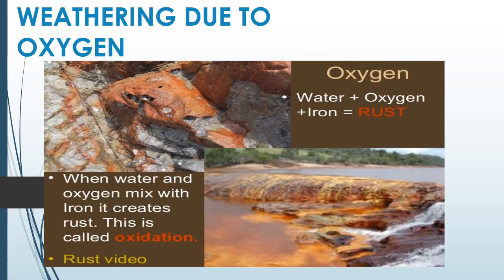When water gets mixed with oxygen and reacts with minerals present inside the rock, if there is iron in the rock, the rock will start rusting. For example, when we keep an iron rod outside in the open air — especially in the rainy season — the iron material exposed to outside temperature continuously receives oxygen and water, and that iron gets rusted.